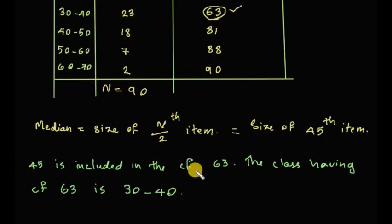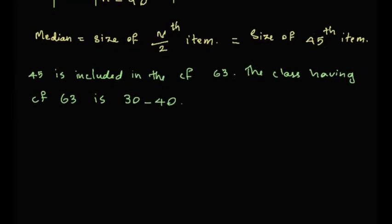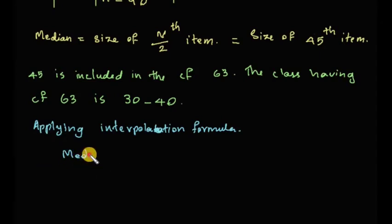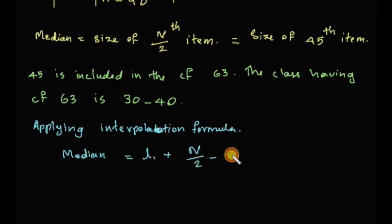Now we apply the interpolation formula. The median class is 30 to 40, so we apply: Median = L1 + (N/2 minus CF) divided by F, into C.